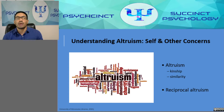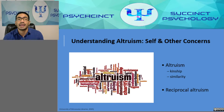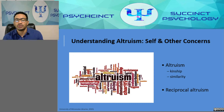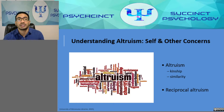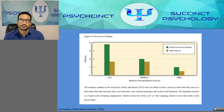Why would we help people we're not related to? One explanation is reciprocal altruism — the idea that if we help others now, they'll return the favor if we need help in the future. By helping others, we increase both our own chances of survival and theirs. Over evolutionary history, those who engaged in reciprocal altruism reproduced more often, enabling this behavior to persist. It means people may even help strangers based on the assumption that doing so may lead others to help them later.